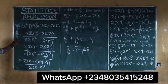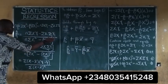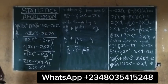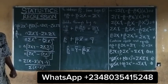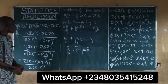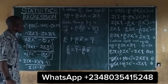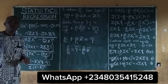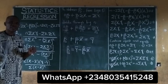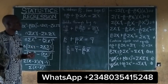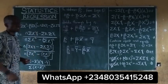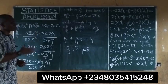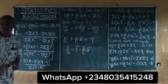So our B0 estimate is Y-bar minus B1*X-bar, while our B1 estimate is the formula derived above. This is how we obtain the estimates of B0 and B1 from the linear regression model. For more on this, you need to subscribe to this channel.